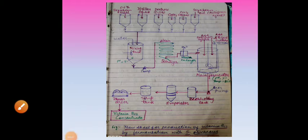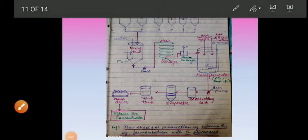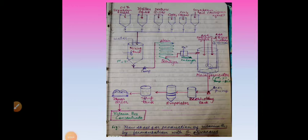Good afternoon dear students. Now we will continue with the production of vitamin B12. In the last video we studied about the flow chart of vitamin B12 production, where all the ingredients required for the production medium are mixed in a mixing tank, sterilized and then put into the main fermentation vessel where the temperature is maintained in the range of 80 degrees Fahrenheit. The inoculum and anti-foam agents are required.